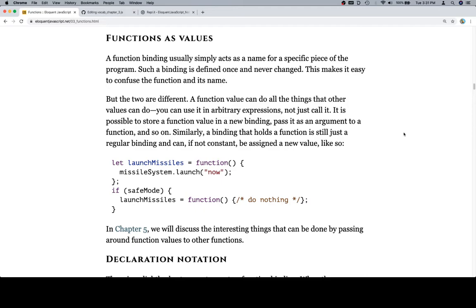But the two are different. A function value can do all the things that other values can do. You can use it in arbitrary expressions, not just call it. It is possible to store a function value in a new binding, pass it as an argument to a function, and so on.